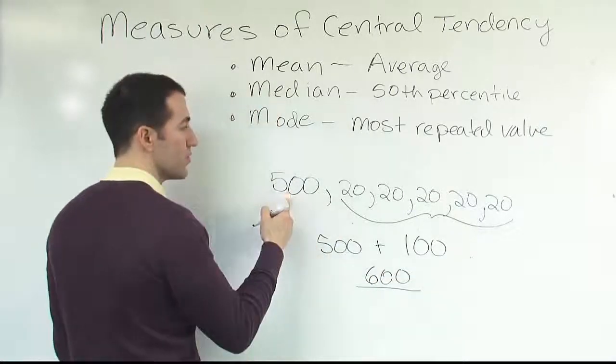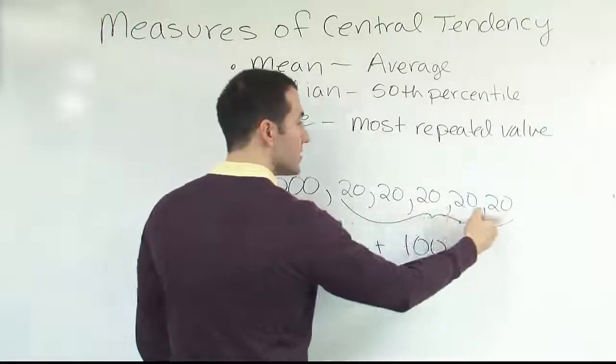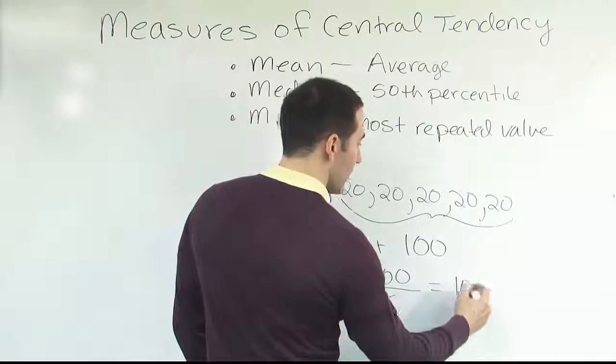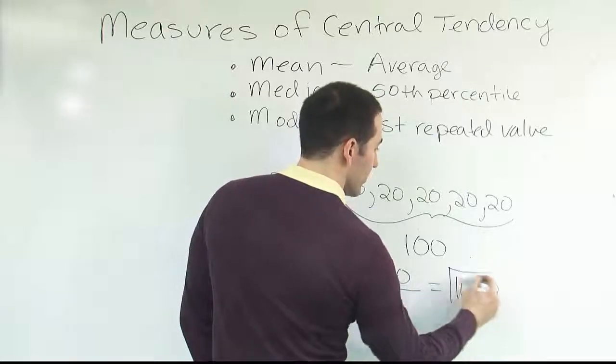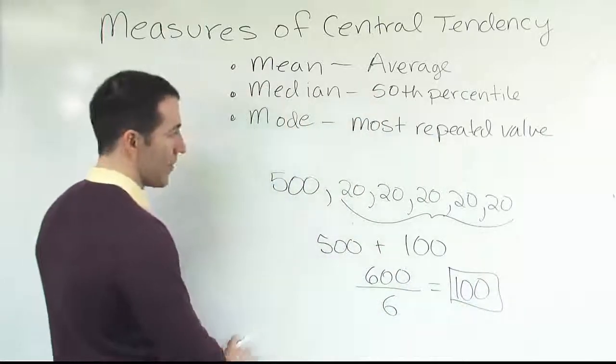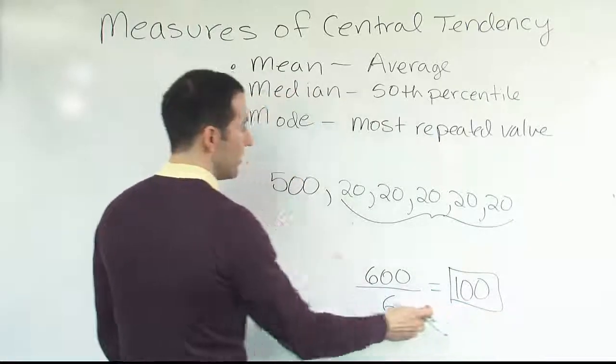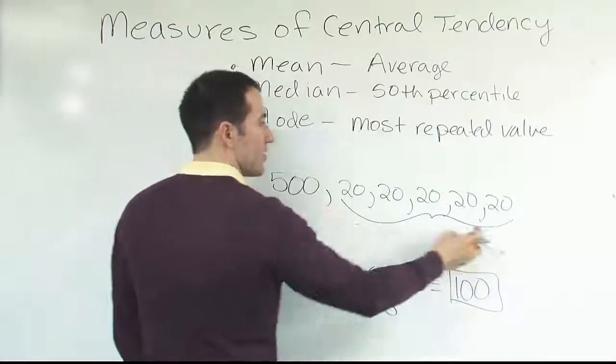If we average those, there's one, two, three, four, five, six numbers. The sum is $600,000 divided by six, we get the average. So you get $100,000 per year. So let's look back now at the original data set, right? So the average is $100,000 a year, and we have these six numbers.